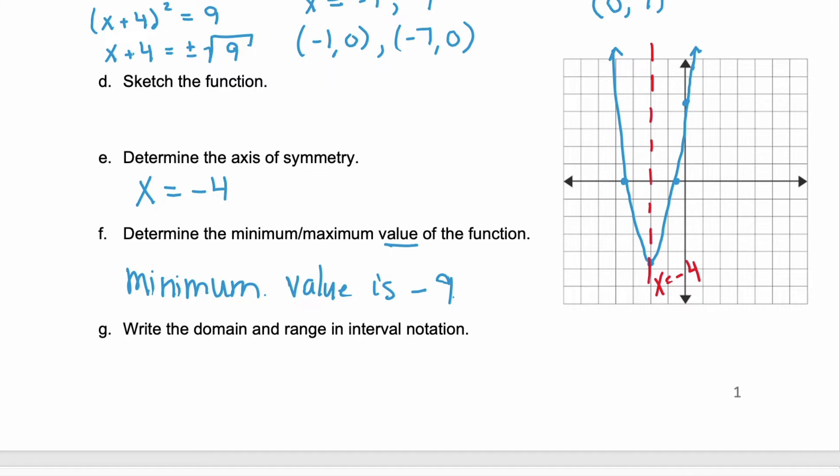Now we need to find the domain and the range, and put those in interval notation. The domain are all possible x values. Notice that this graph continues on upward, but also outward. So the domain here is going to be from negative infinity to infinity. All x values are possible.